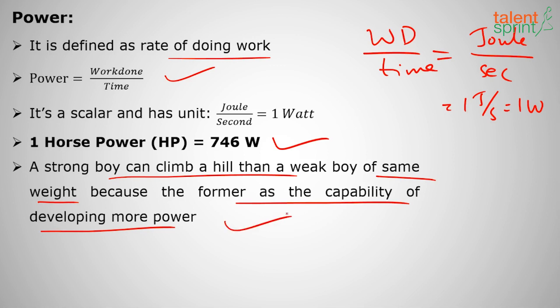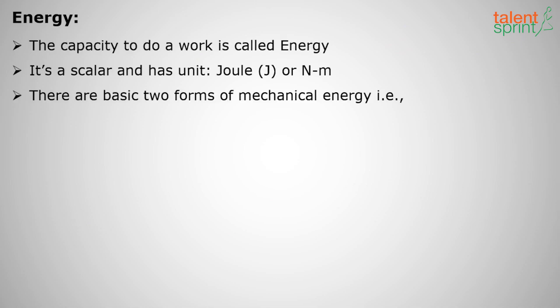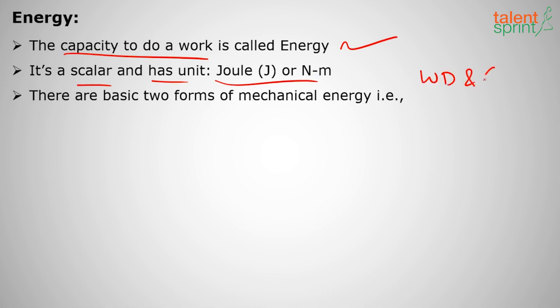Moving on to energy: the capacity to do work is energy. It is a scalar quantity. Importantly, work done and energy have the same units — joules, or one newton-meter.